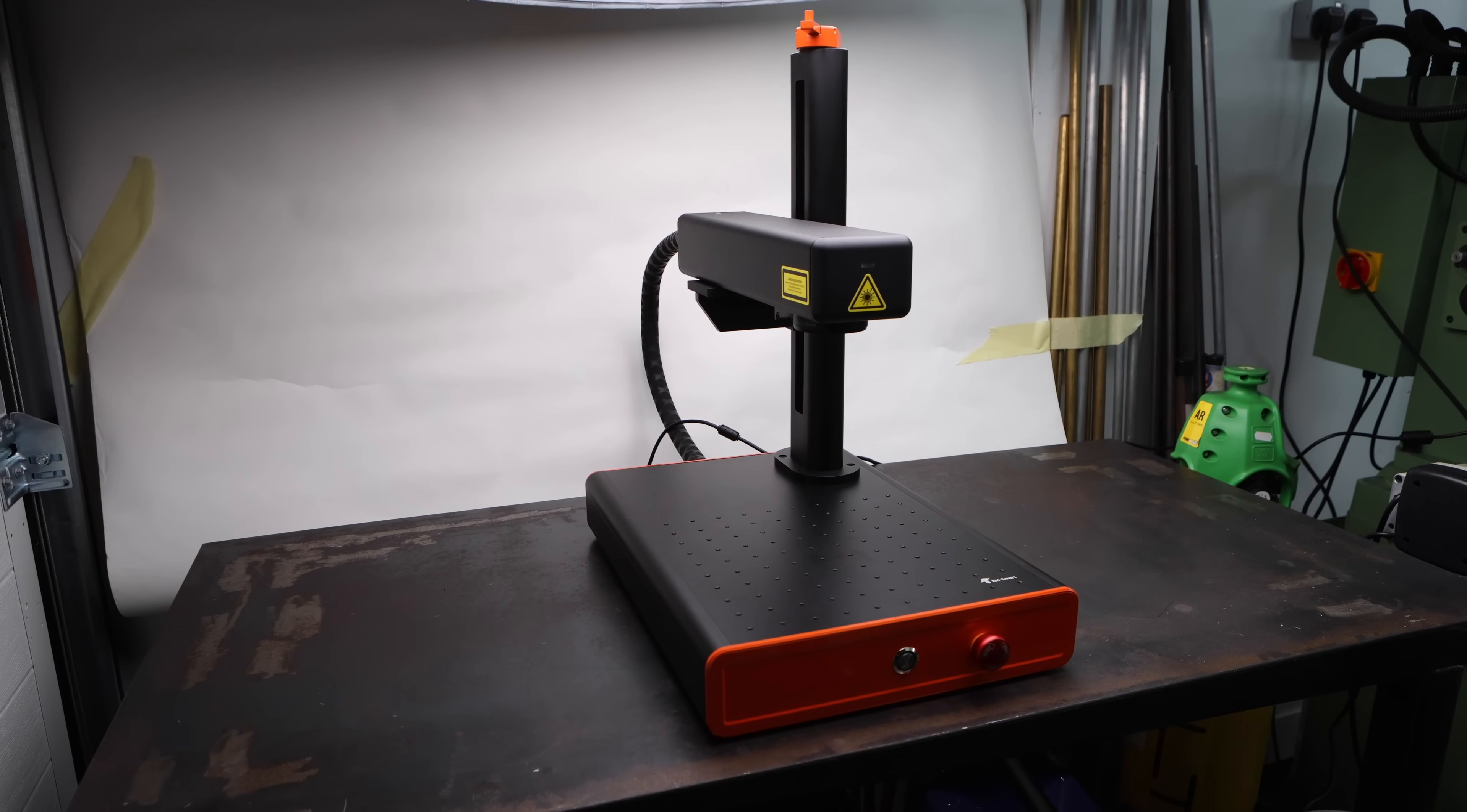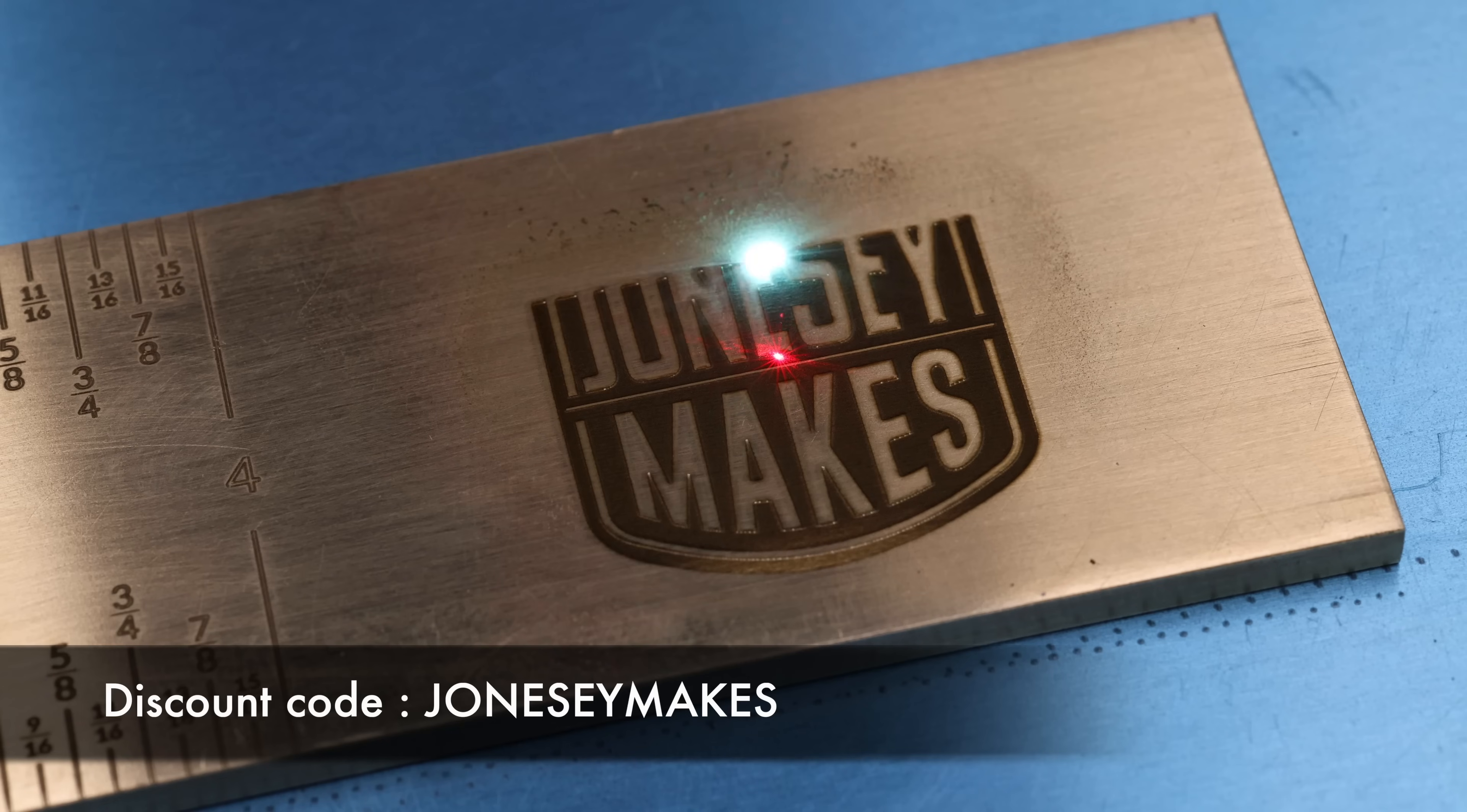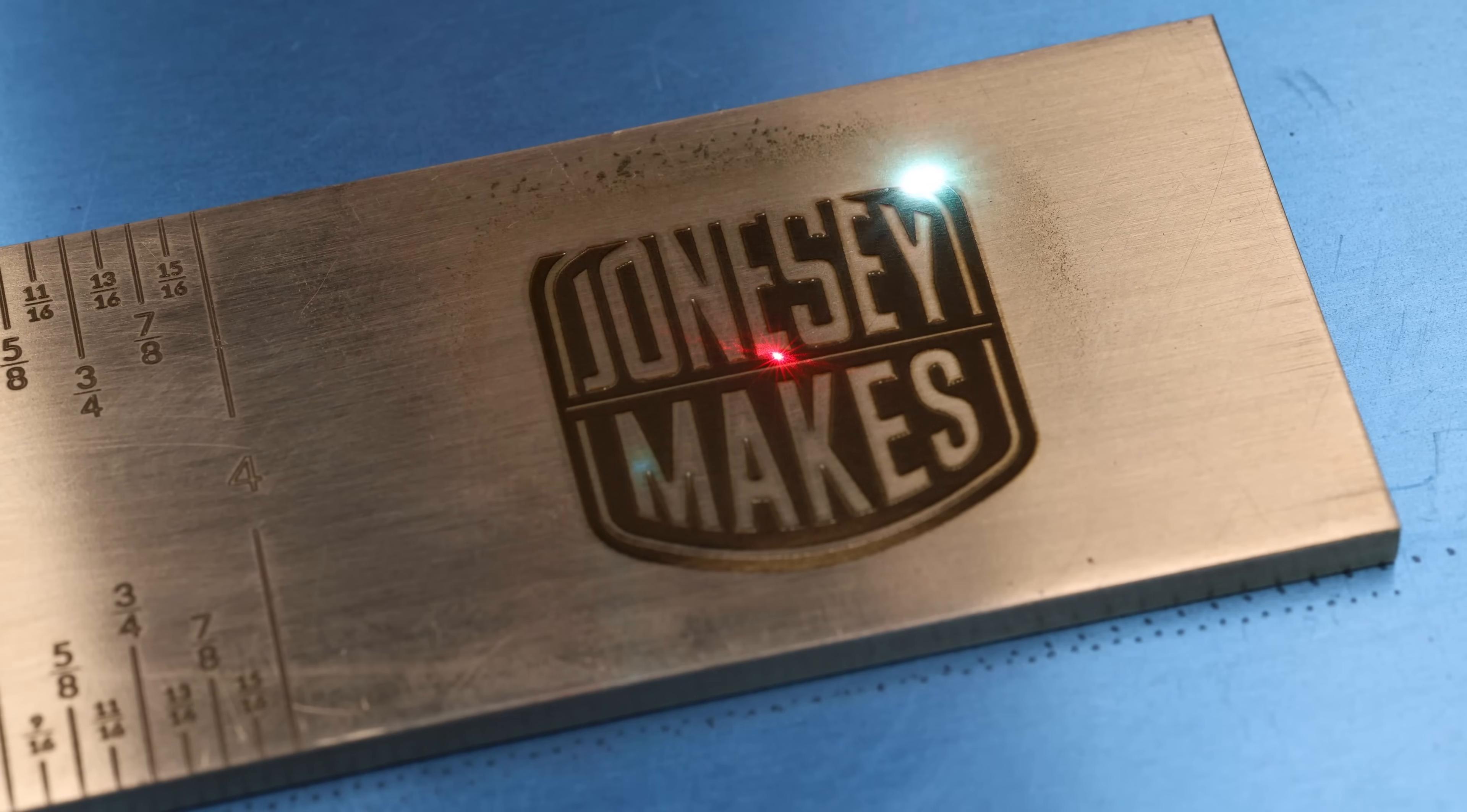If you're interested in purchasing one for yourself, they ship either from a US warehouse or a European warehouse and there's a web store for each. I'll leave links to both of those in the description. If you use the discount code JONESEMAKES at checkout, you get an extra $100 or €100 off the purchase price. And you can even use that discount code for their more expensive MOPER lasers.